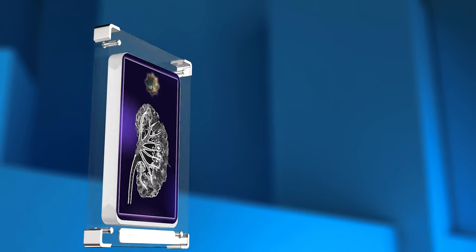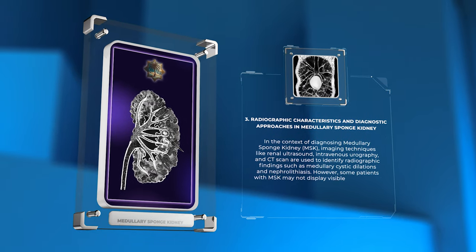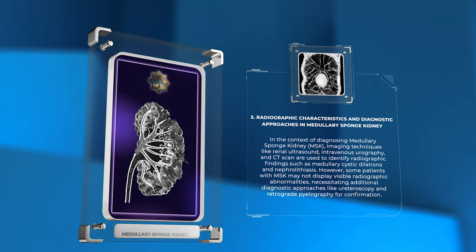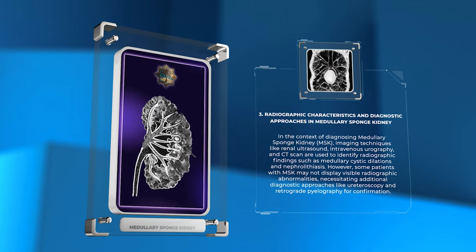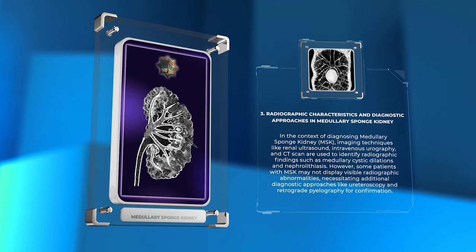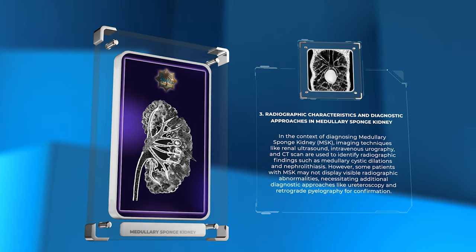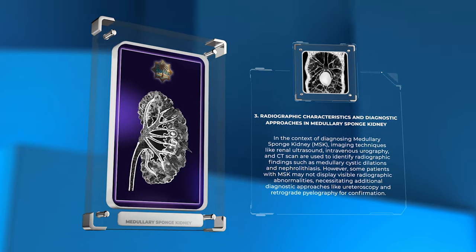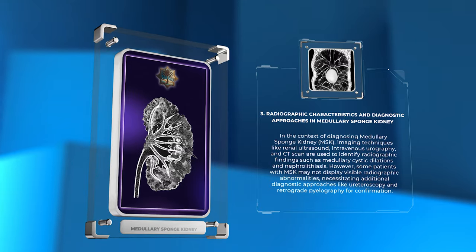In the context of diagnosing medullary sponge kidney, MSK, imaging techniques like renal ultrasound, intravenous urography, and CT scan are used to identify radiographic findings such as medullary cystic dilations and nephrolithiasis. However, some patients with MSK may not display visible radiographic abnormalities, necessitating additional diagnostic approaches like ureteroscopy and retrograde pyelography for confirmation.